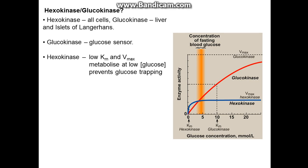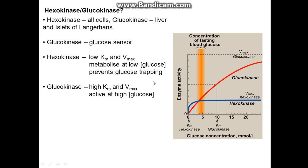Hexokinase is present in almost all cells in the body, but glucokinase is only really present in the liver, the islets of Langerhans, and the pancreas — glucokinase is a glucosensor. Hexokinase has a low KM and low Vmax, metabolizing glucose at low levels and preventing excessive trapping within cells, keeping it healthy. Glucokinase, being present in the liver, needs to metabolize large quantities of glucose quickly, as glucose will hit the liver before the systemic blood system. It has a high Vmax and a high KM to allow for rapid metabolism of large amounts of glucose, and is about five times more active than hexokinase.